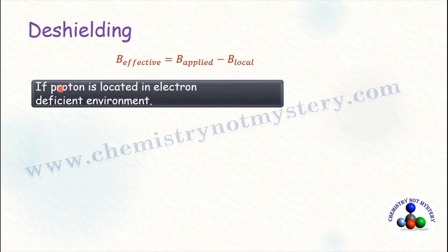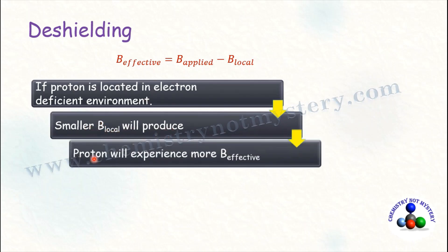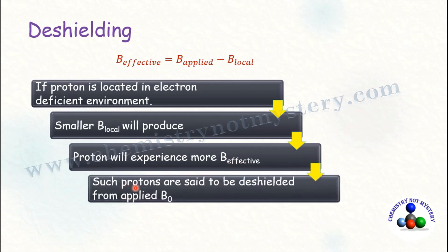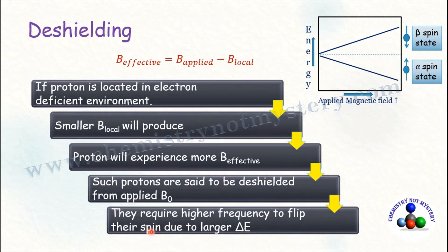If a proton is located in an electron-deficient environment, a smaller B_local is produced, so the proton experiences a greater B_effective. Such protons are said to be deshielded from the applied magnetic field. Because they experience more B_effective, there is a larger energy difference between their alpha and beta spin states. Consequently, deshielded protons require a higher frequency to flip their spin.